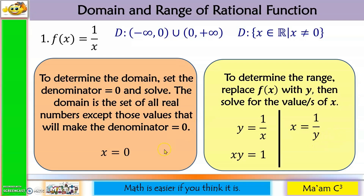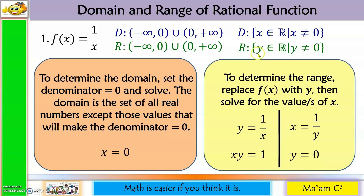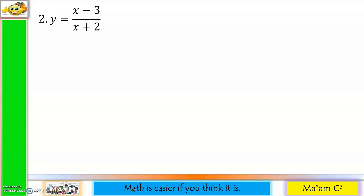Setting y = 0 shows that 0 is the value that makes the denominator equal to 0, so we exclude it from the range. Our range is: y ∈ ℝ such that y ≠ 0.